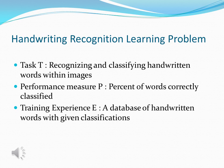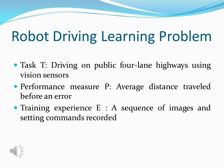Training experience E for handwriting recognition is a database of handwritten words with given classifications. The robot driving learning problem is another example of a well-posed learning problem. Task T is driving on public four-lane highways using vision sensors. Performance measure P is the average distance travelled before an error. Training experience E is a sequence of images and steering commands recorded.